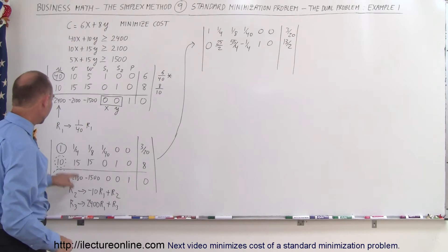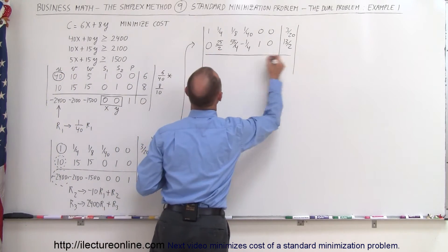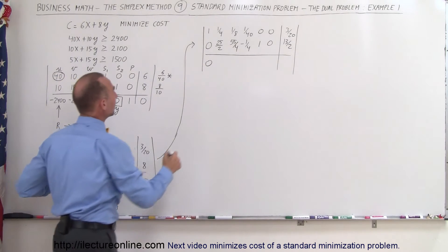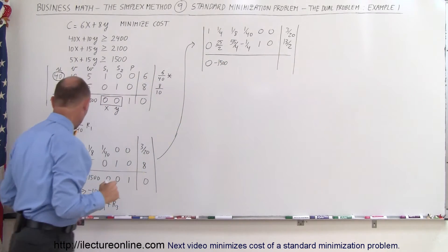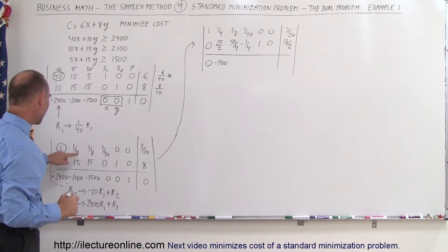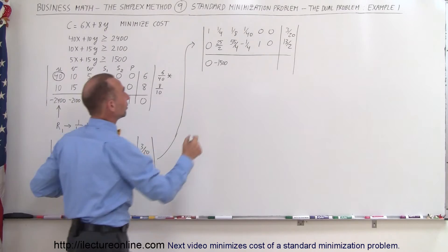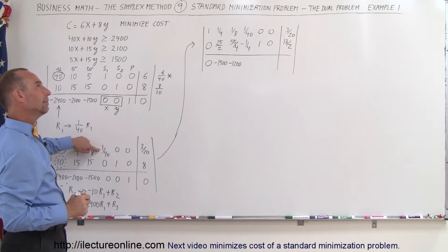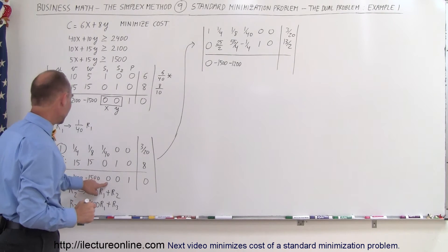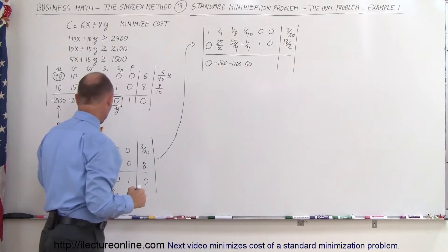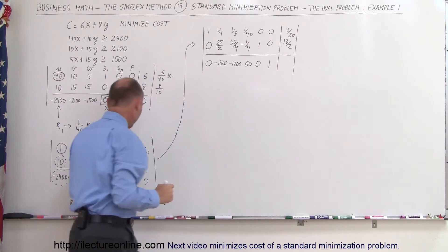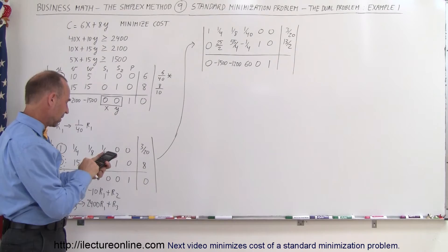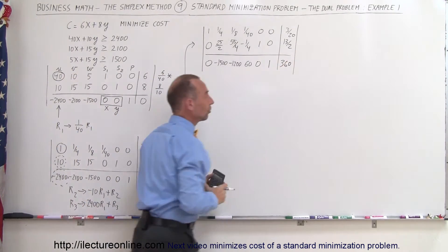Now for the third row: 2400 times 1 added to that gives me 0. 2400 times 1/4 is 600; added to minus 2100, that gives minus 1500. 2400 times 1/8 — that's minus 300 added to minus 1500, giving minus 1200. 2400 times 1/40 — 40 goes into 2400 sixty times — so that's 60 added in, giving 60. 2400 times 0 is nothing; 2400 times 0 is nothing. 2400 times 3/20: 2400 divided by 20 times 3 gives 360. So there's our intermediate answer — a profit of 360, a value for X of 60, and a value for Y of 0.